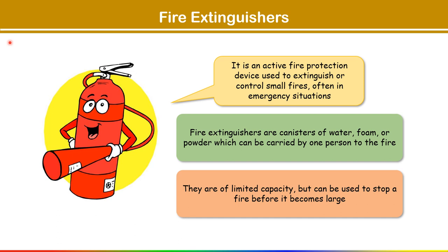They are of limited capacity but can be used to stop a fire before it becomes large. When you press the lever or handle, the agent is expelled through a nozzle or hose to extinguish or suppress the fire by removing at least one of the fire elements — heat, oxygen, and fuel. If any of them is not present, fire will not occur. We remove at least one element: heat, oxygen, fuel, or the chemical reaction necessary for combustion.